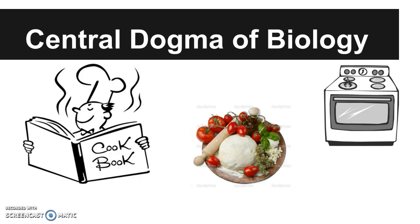The first thing we need to know is that all of this is called the central dogma of biology. The central dogma of biology is kind of like making a pizza — this is one big analogy. If you have a recipe book and a chef, that kitchen is kind of like the nucleus, or where the DNA is. That cookbook you have in your kitchen is going to be like your DNA — it has all the instructions for making everything.